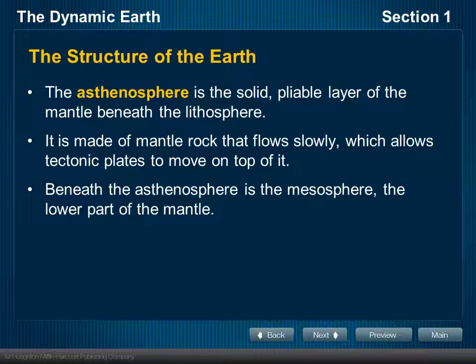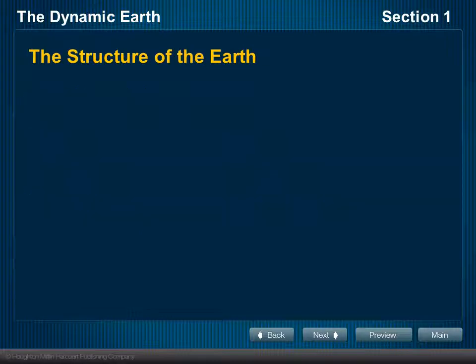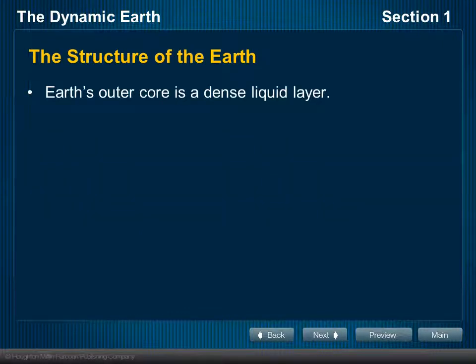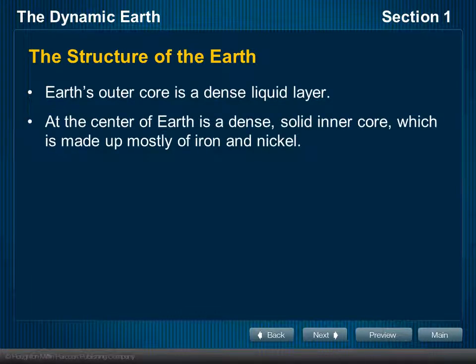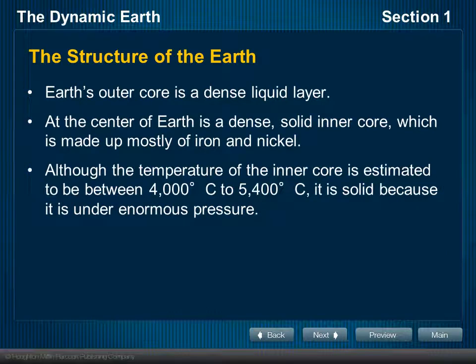Deeper beneath the asthenosphere is the mesosphere, which is the lowest part of the mantle. Then we come to the Earth's outer core, which is a dense liquid layer. And finally there is the inner core. So we get our five structural layers by dividing the core into two: the outer core, which is very dense but liquid, and at the very center, the inner core, which is mostly iron and nickel and is viewed as a solid.